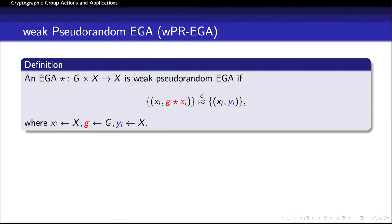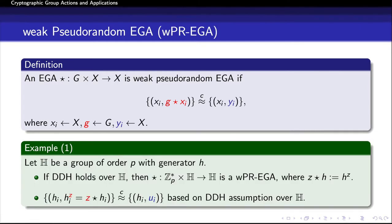In a similar fashion, we can augment an effective group action with weak pseudo-randomness. An EGA is a weak pseudo-random EGA if no attacker can distinguish samples of the form (x_i, g star x_i) from samples of the form (x_i, y_i), where x_i's are chosen uniformly from the set, g is chosen uniformly from the group and is hidden from the adversary, and y_i's are also uniformly chosen from X. If the DDH assumption holds over group H, then the action defined by exponentiation is a weak pseudo-random EGA — meaning H_i and the action of Z on H_i are computationally indistinguishable from all random pairs.